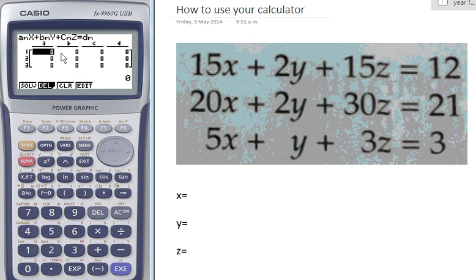Now we get to put in the coefficients of each. So for our first variable, 15X, we're just going to put in the coefficient, which is 15. The next one we've got 2Y, so we'll put in 2. Then we've got 15 again and 12.